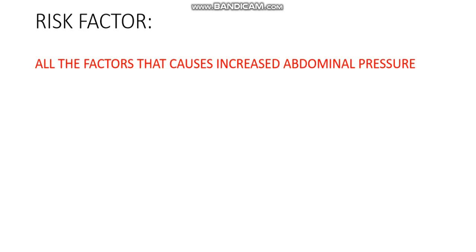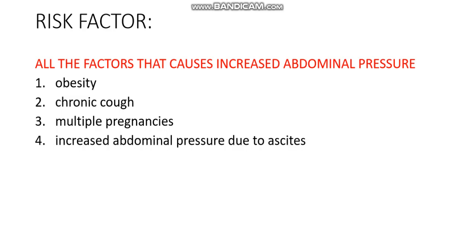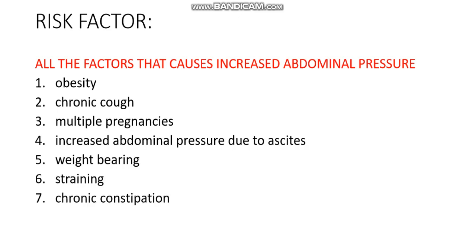You can guess what the risk factors are. They are obesity, chronic cough, and multiple pregnancy — all these conditions lead to increased abdominal pressure. We also have increased abdominal pressure due to ascites, which can be due to any cause like liver cirrhosis. Then we have weight bearing — this condition is very common in men who go to the gym. And then we have straining, which is mostly due to chronic constipation and urinary obstruction.